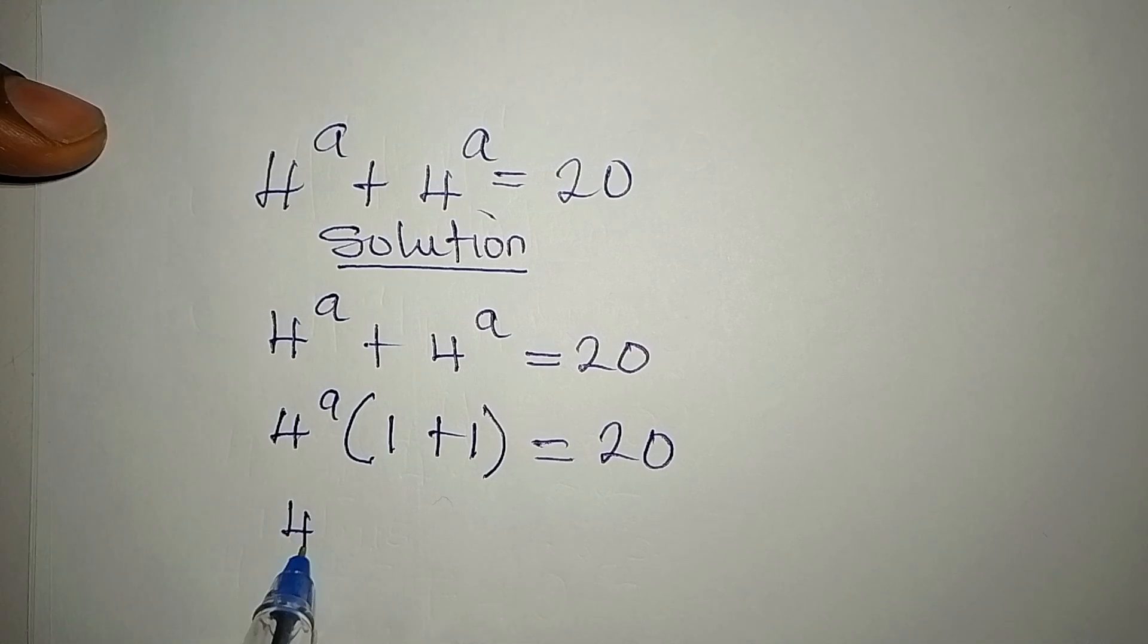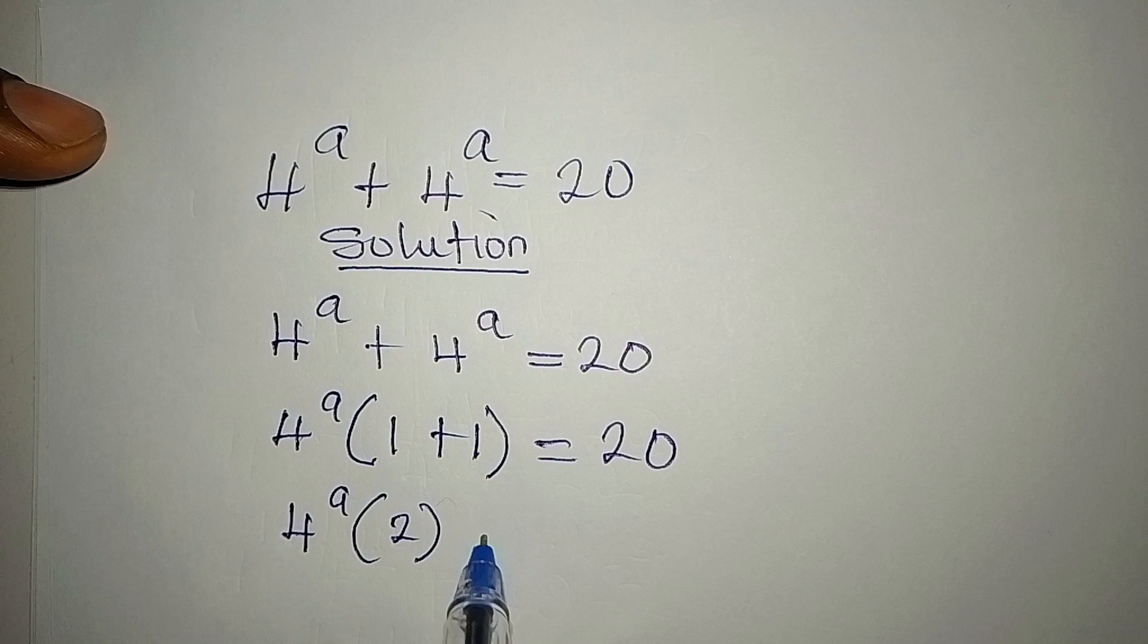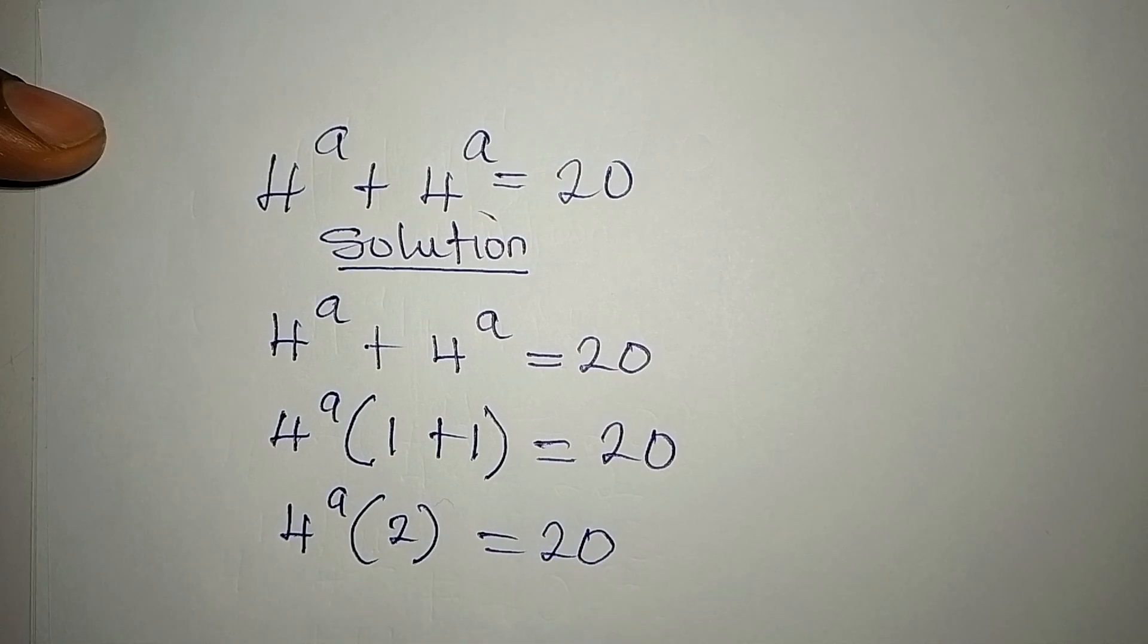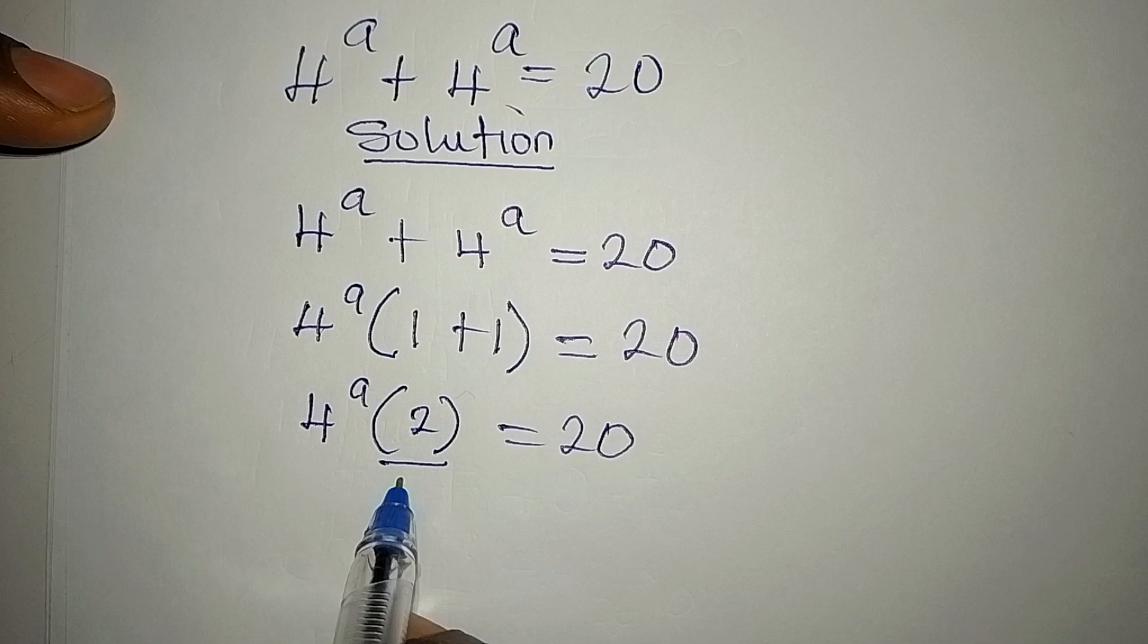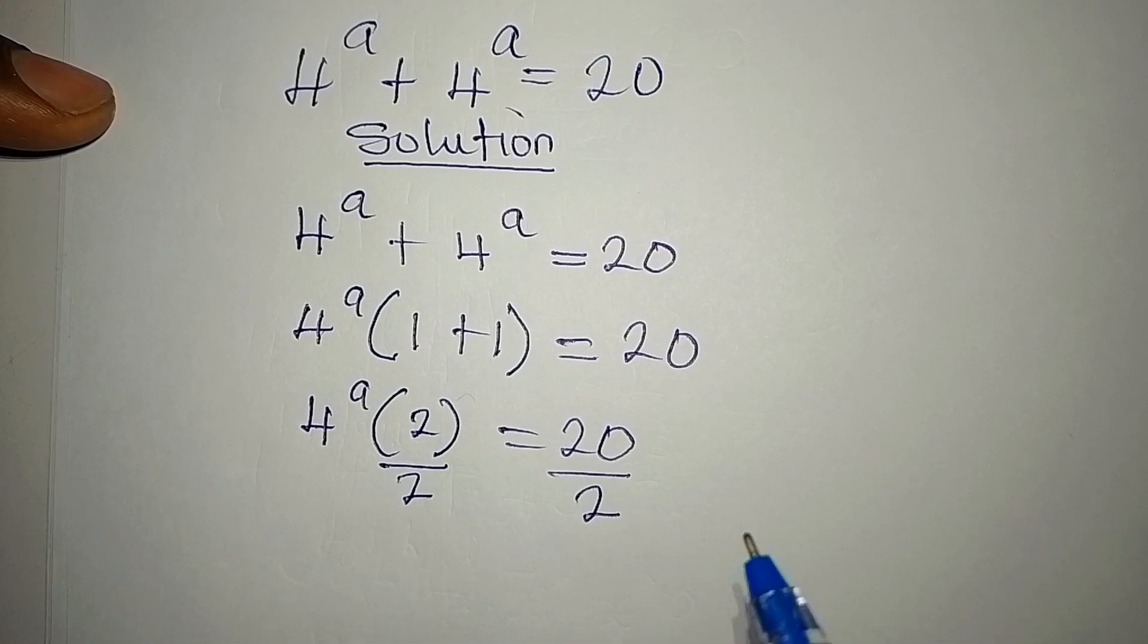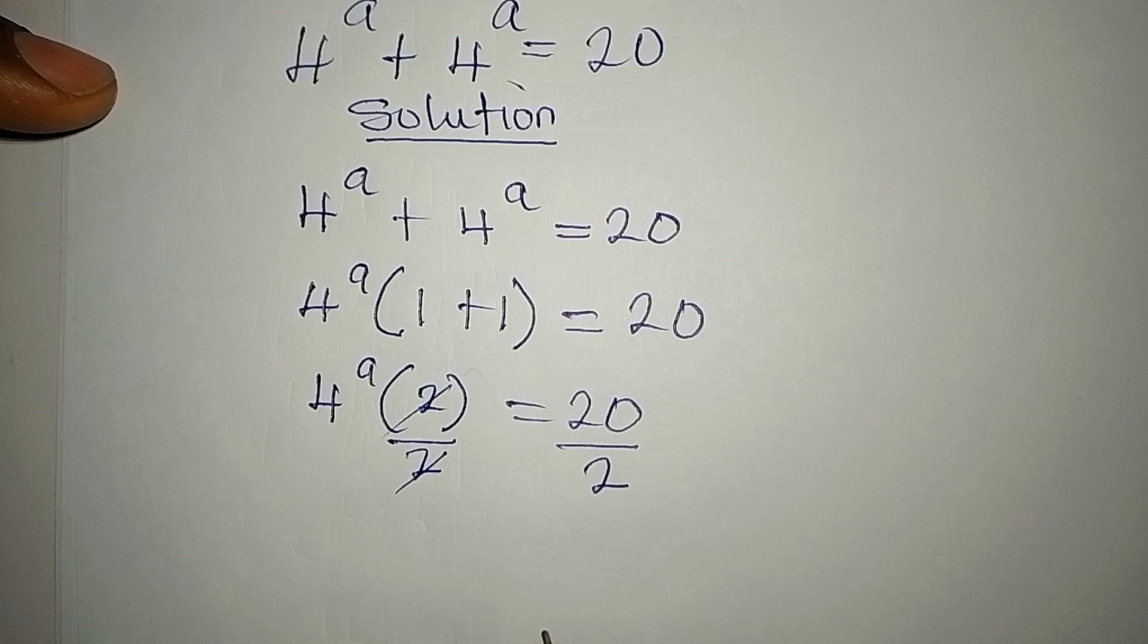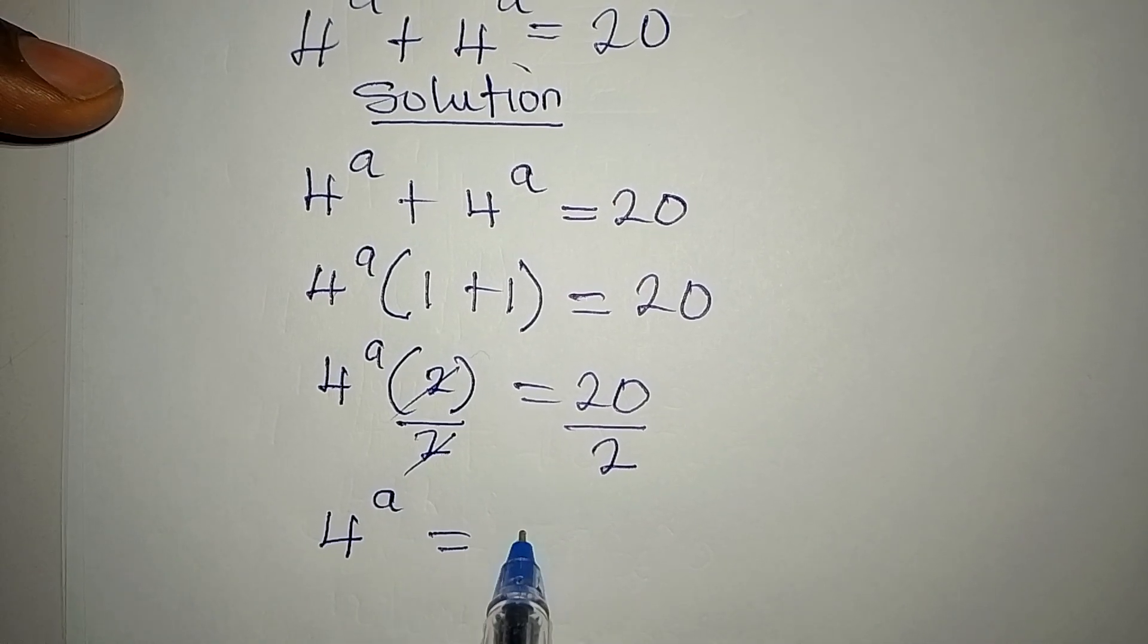This is 4 to the power of a multiplied by 2 equals 20. And then since we are multiplying these two, we can divide to get 4 to the power of a as the subject. So 4 to the power of a is equal to 10.